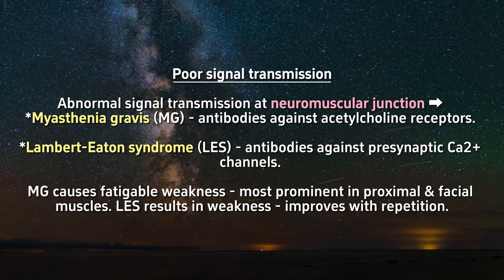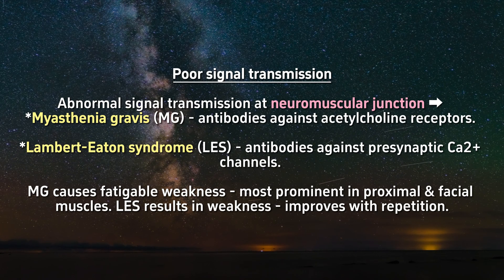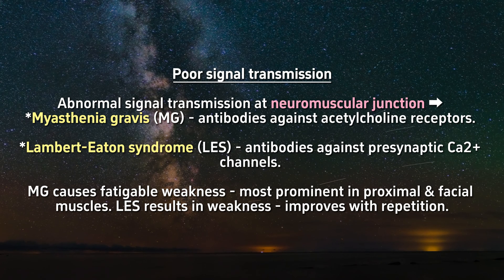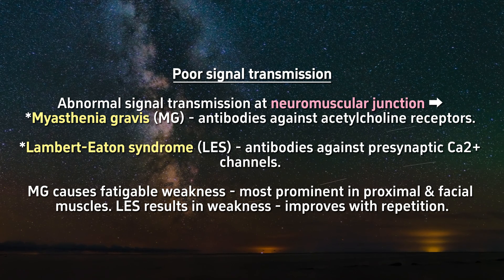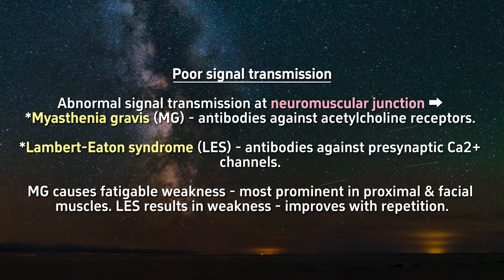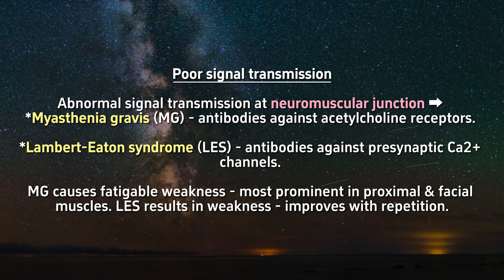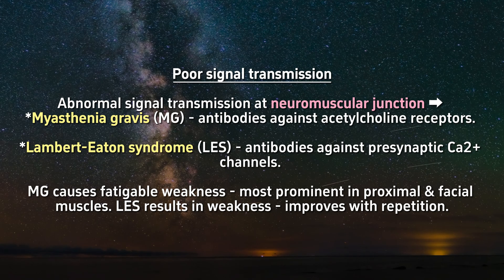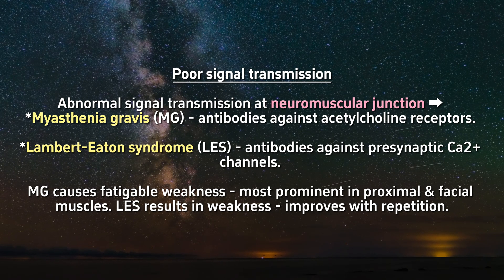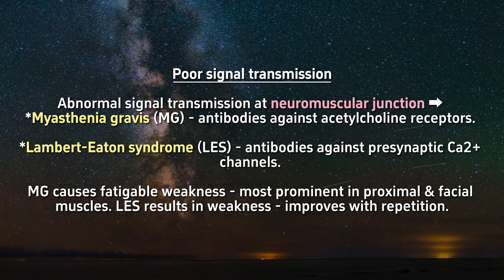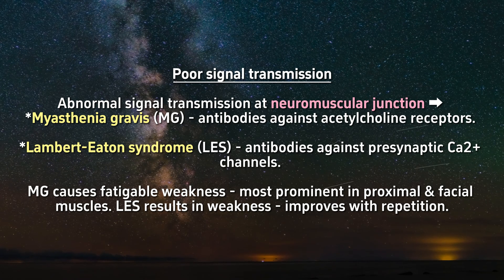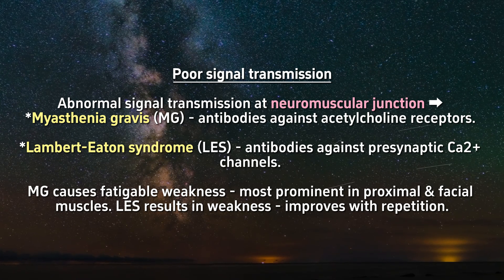Choice E: Abnormal signal transmission at the neuromuscular junction is characteristic of myasthenia gravis, caused by antibodies against acetylcholine receptors, and Lambert-Eaton syndrome, caused by antibodies against presynaptic calcium channels. Myasthenia gravis causes fatigable weakness most prominent in proximal and facial muscles, while Lambert-Eaton syndrome results in weakness that improves with repetition.